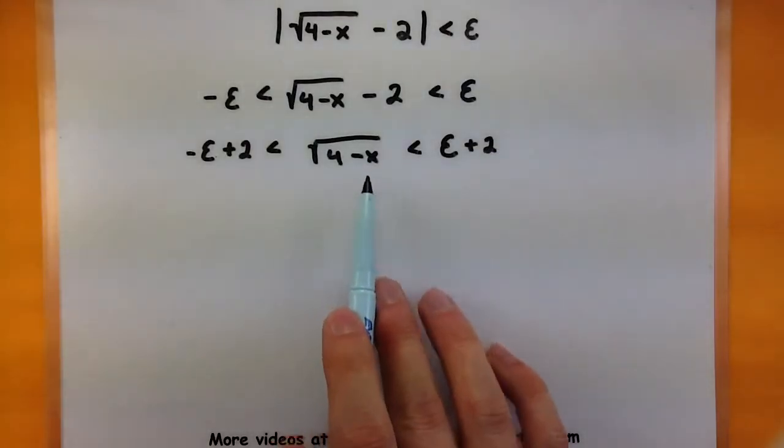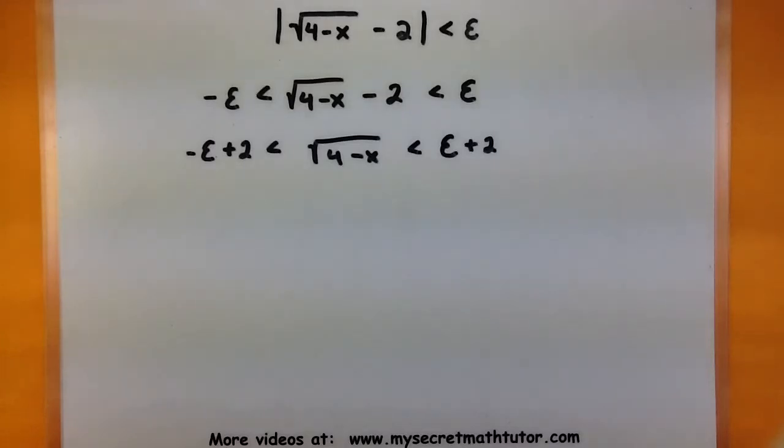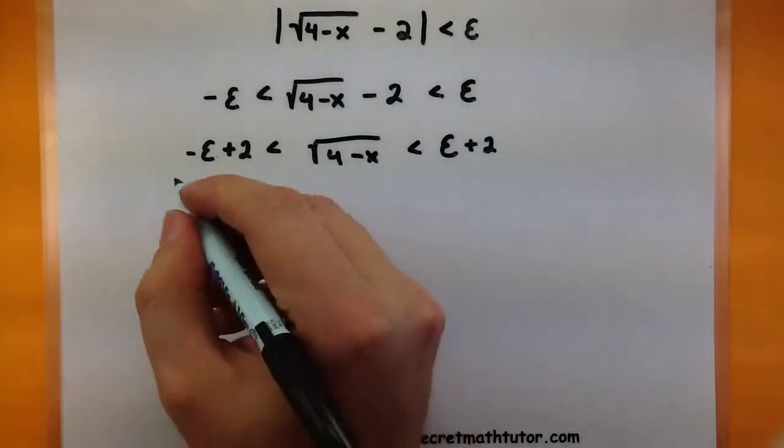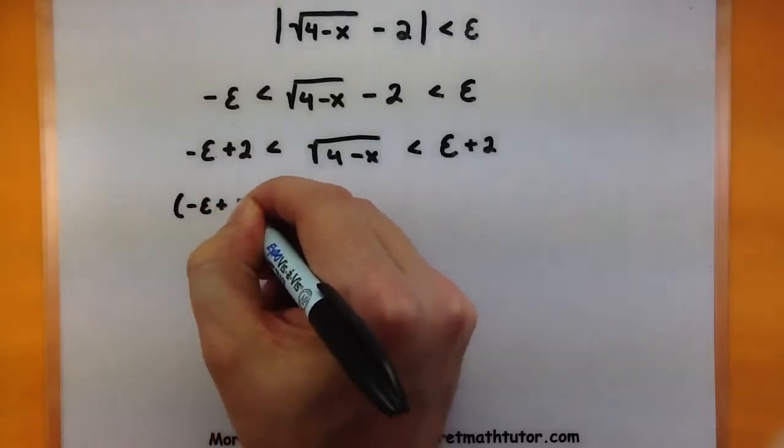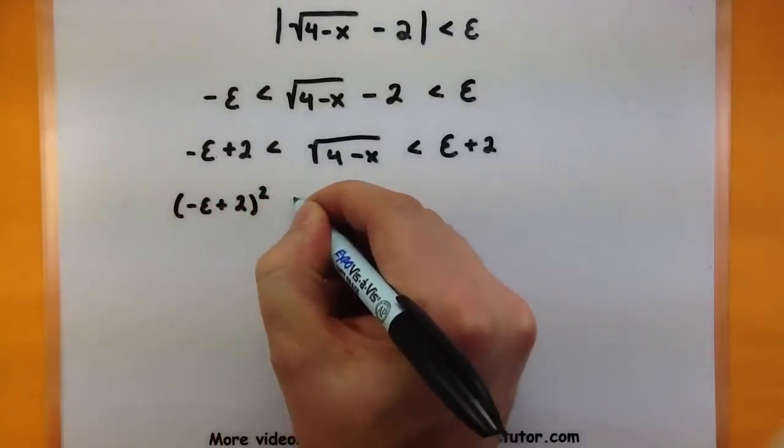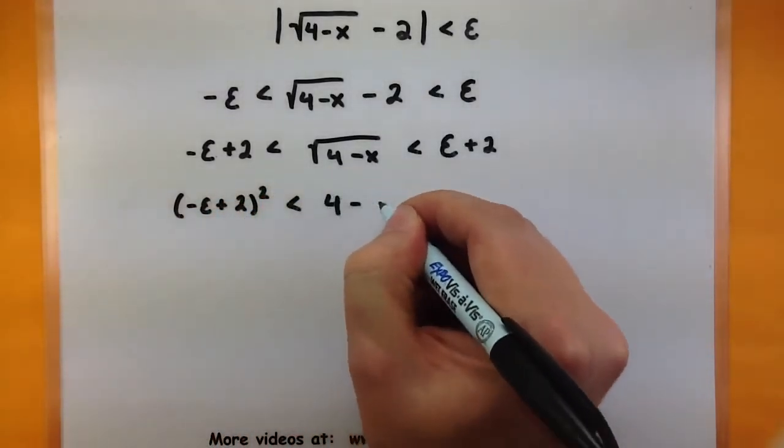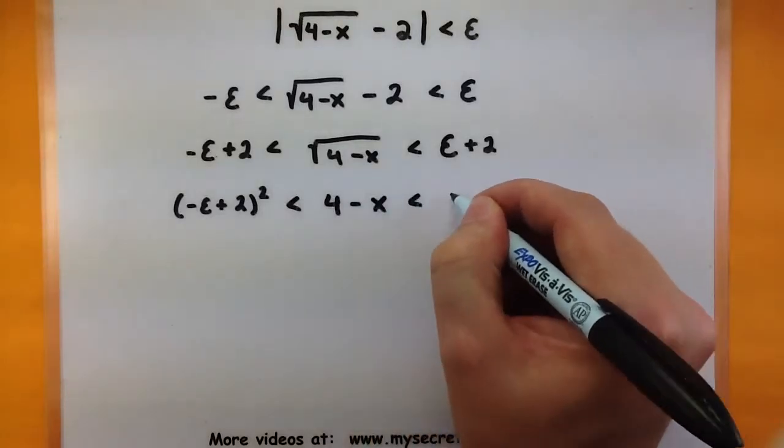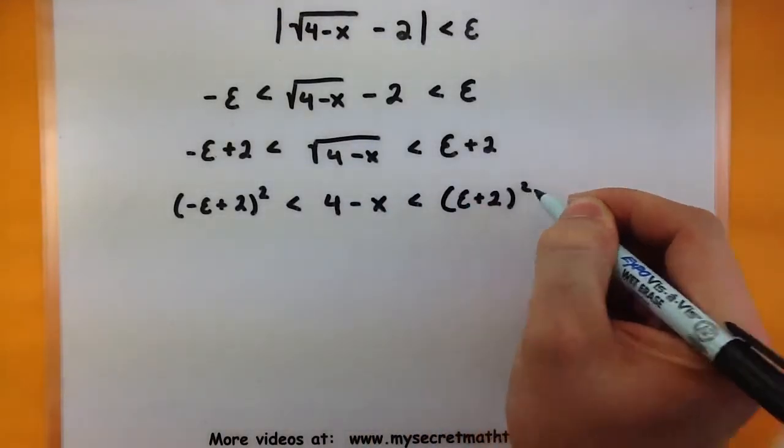So things are looking pretty good. I still need to get a hold of the x. Let's go ahead and square both sides. Minus epsilon plus 2 squared, less than 4 minus x, less than epsilon plus 2 squared.